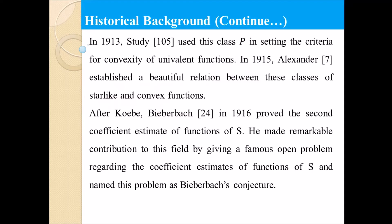After Koebe, Bieberbach in 1916 proved the second coefficient estimate of a function in class S. He made a remarkable contribution to this field by giving the famous open problem regarding the coefficient estimates of functions of class S, and named this problem the Bieberbach conjecture. A conjecture is a mathematical statement that has not yet been correctly proved — it is a statement believed to be true but not yet fully verified.